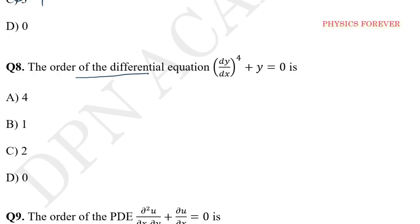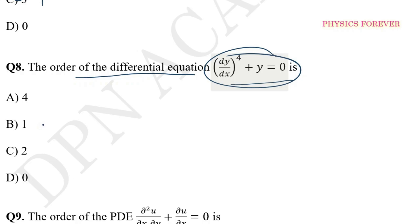The order of a differential equation is the highest order derivative appearing in it. What is the order of this equation? This is the highest order. Order is the highest derivative appearing — option A is correct, which one is 4.